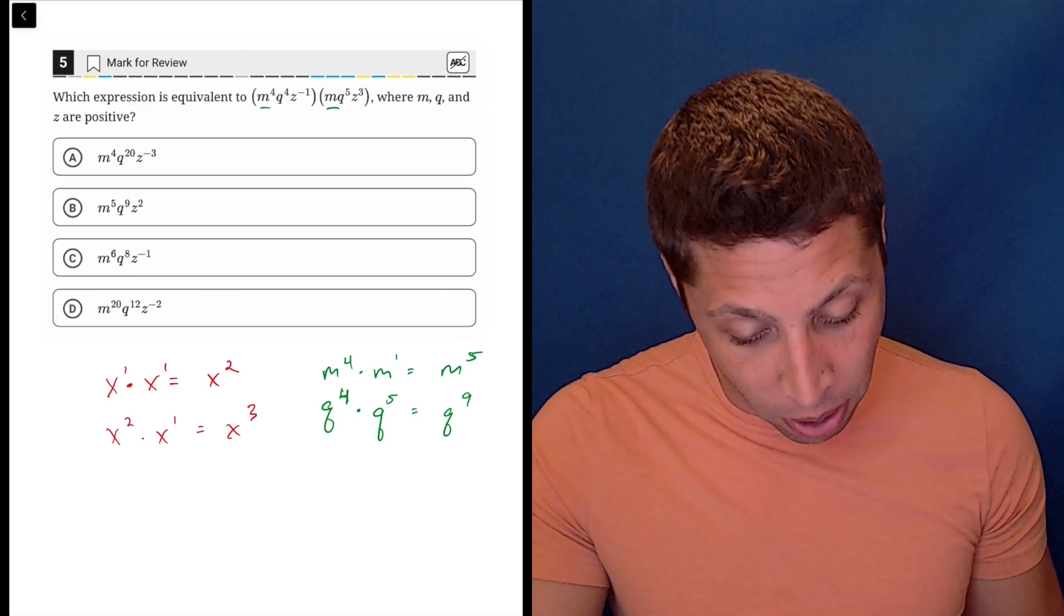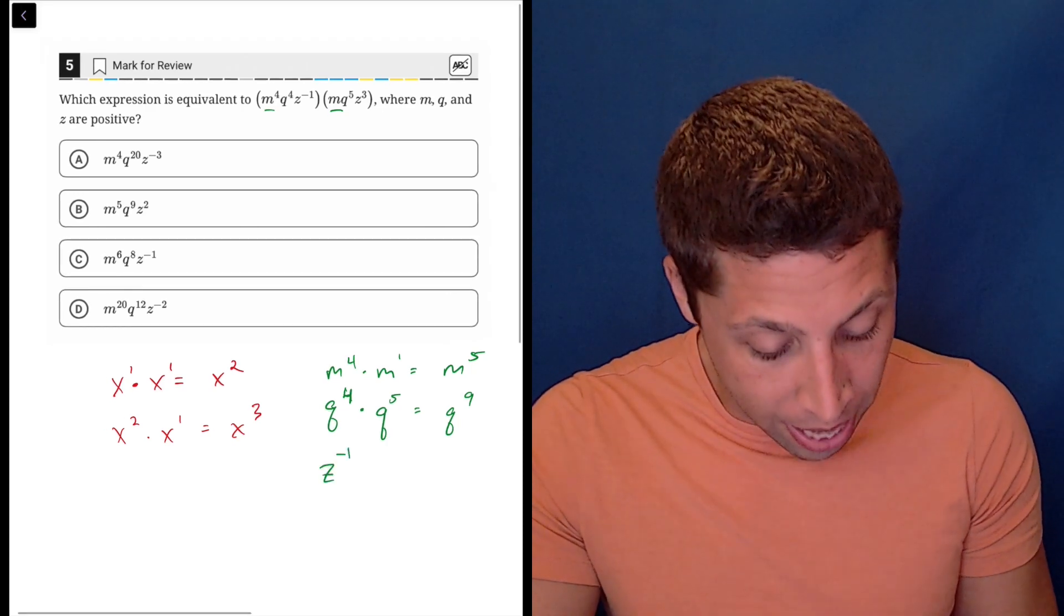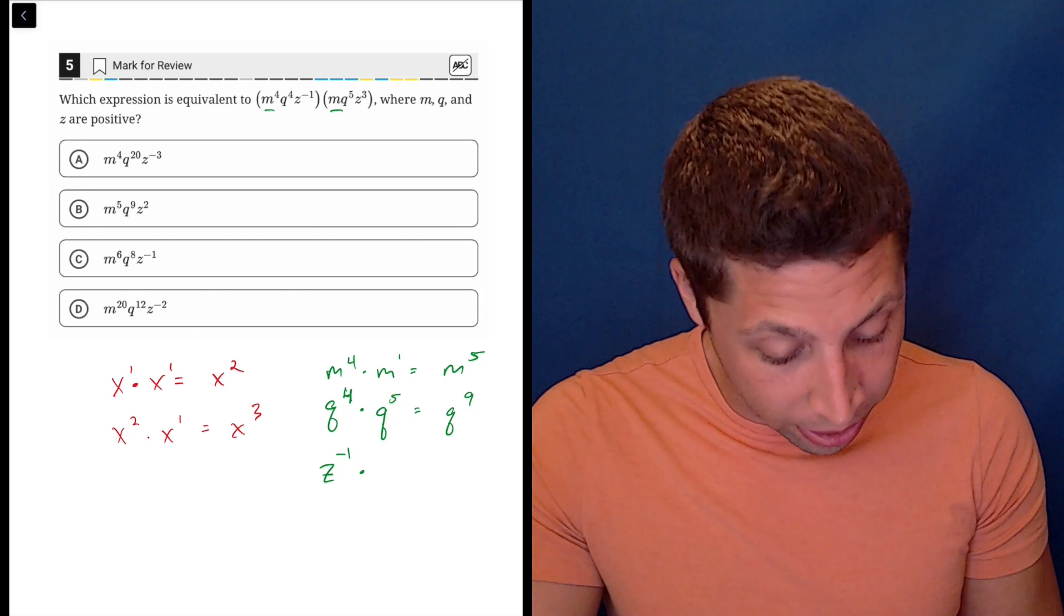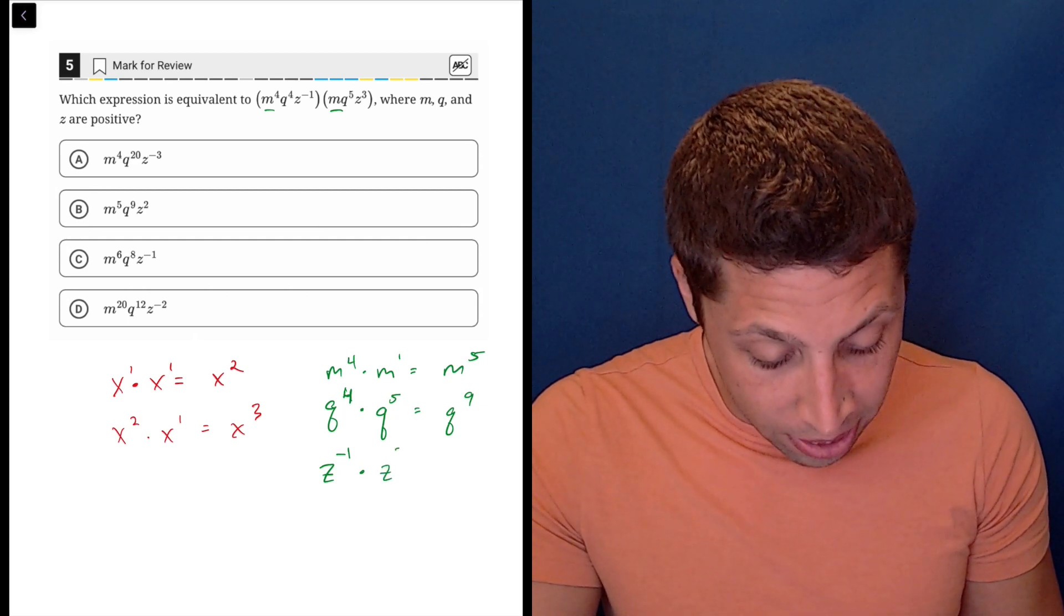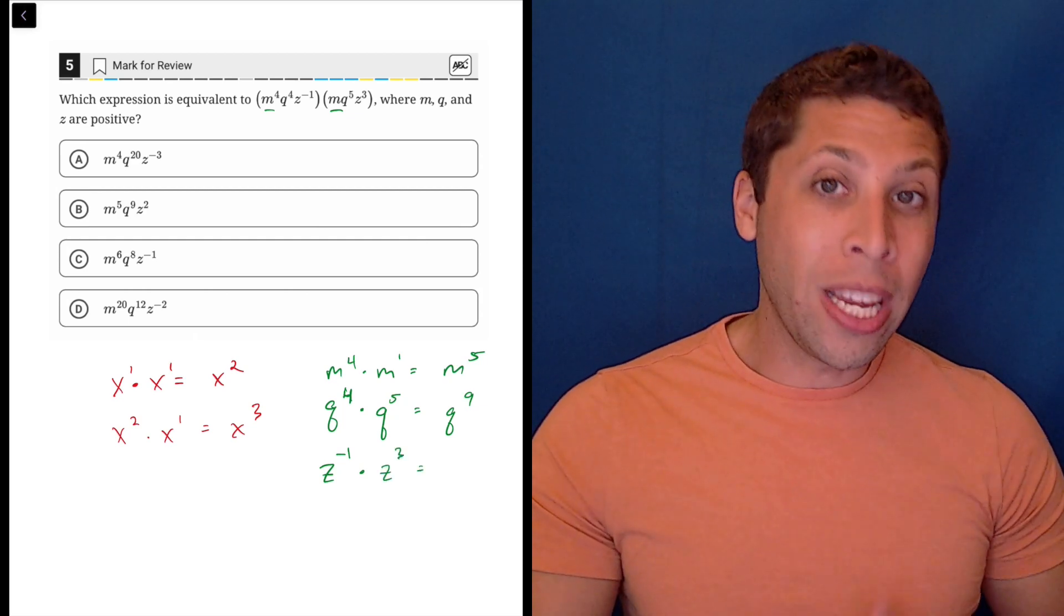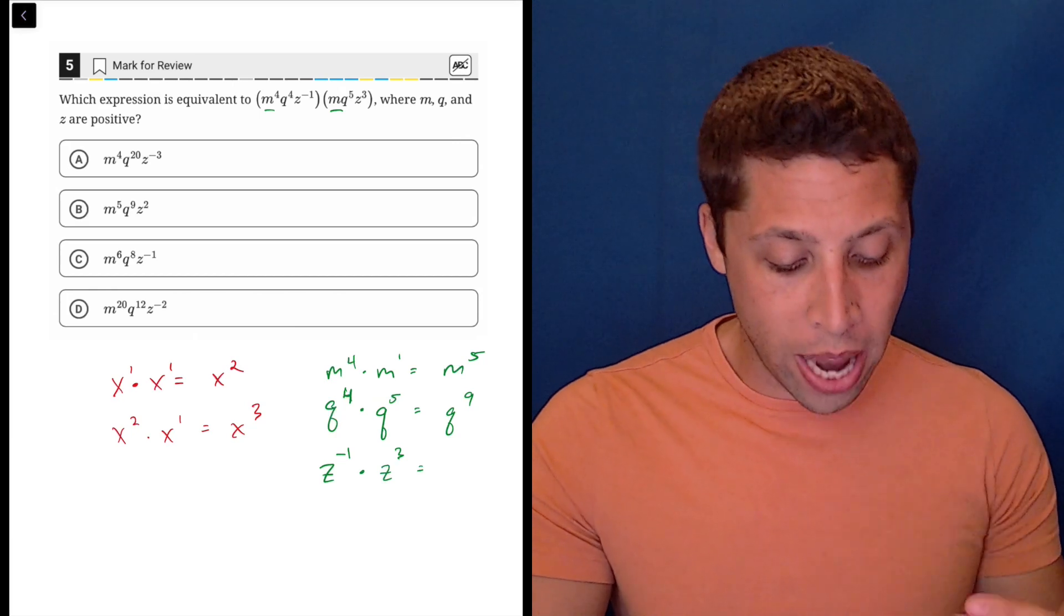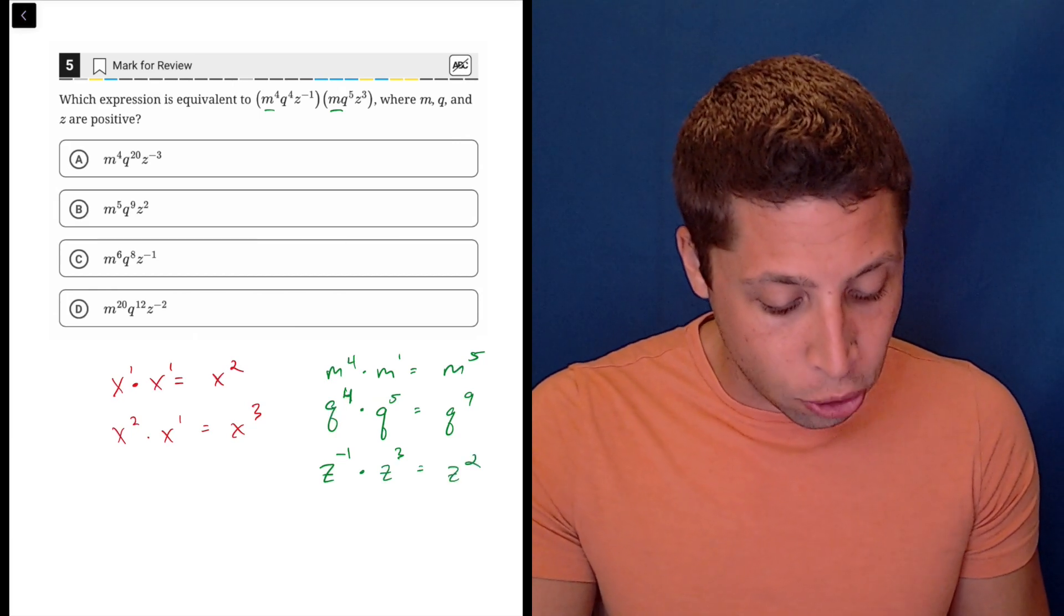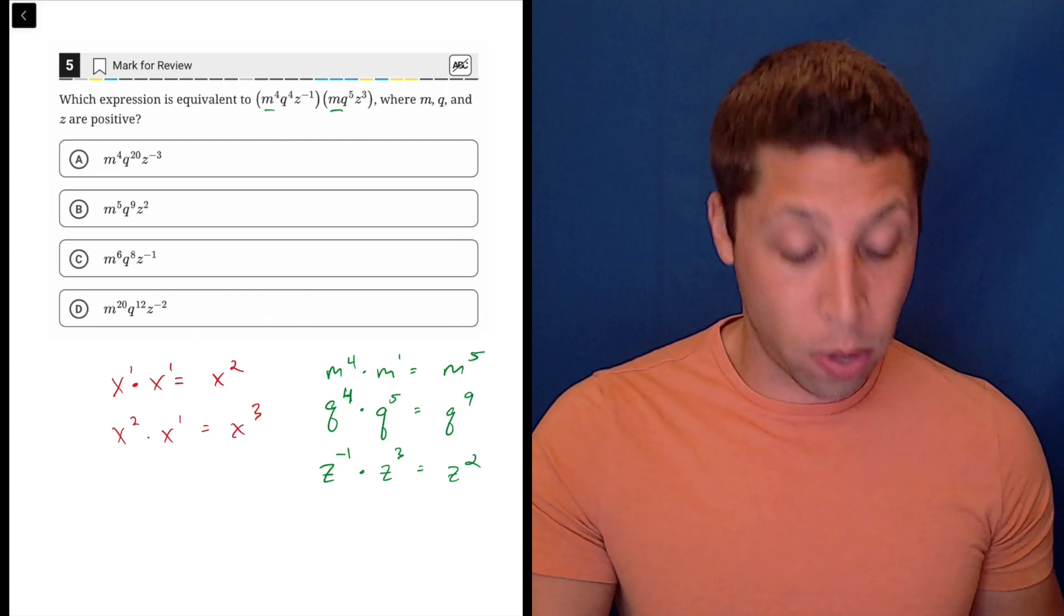And we're starting to get somewhere, but let's finish it up because we do have the weird negative. So z to the negative one times z to the three. And again, we add these exponents. So negative one plus three is two, right? Three minus one is two.